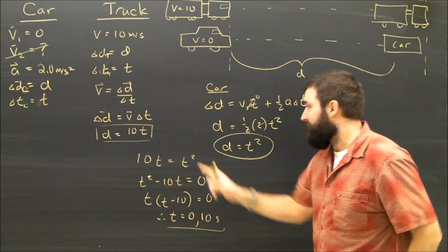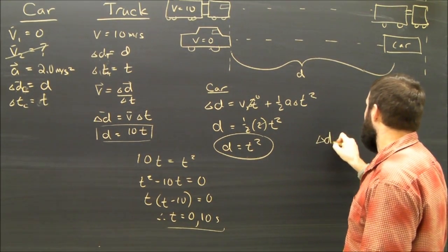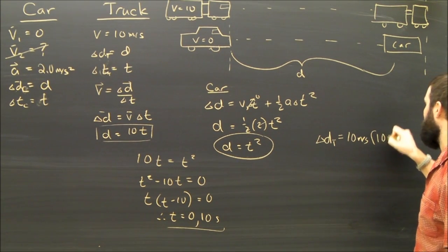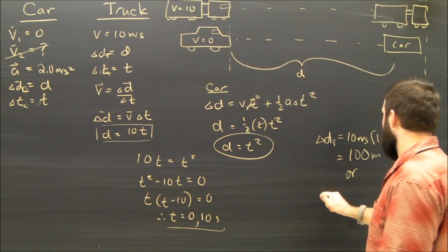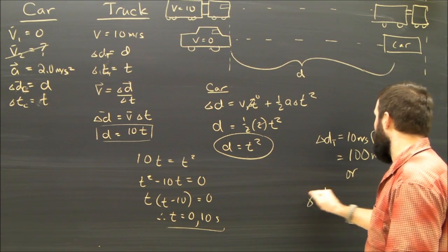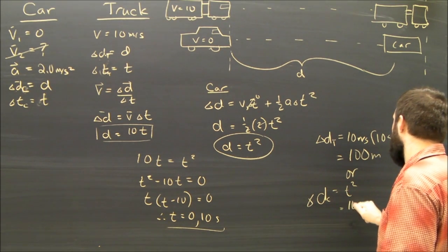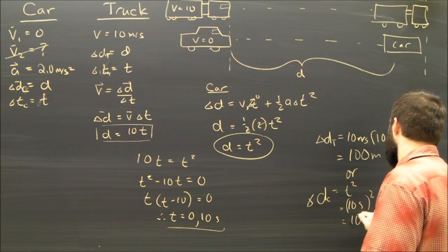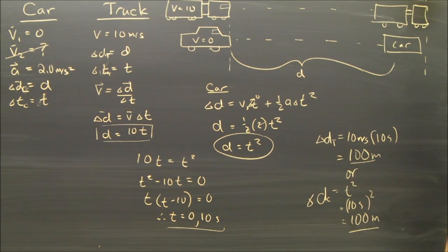They travel the same. I can put 10 into either equation. Either way, the distance that, say, the truck went is 10 meters per second times the 10 seconds. That's 100 meters. Or, I could have said, the displacement of the car, which is T squared, equals 10 seconds squared, 100 meters. The same answer, of course.